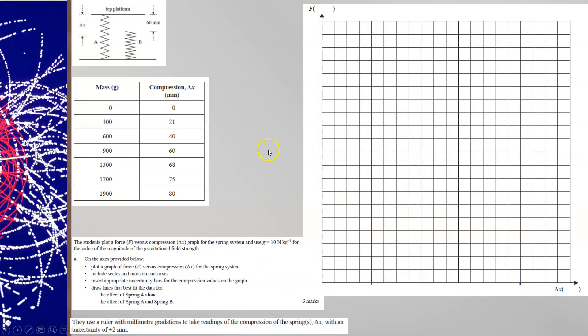To plot the graph, first thing I would have done would be to work out suitable scales. Now they tell you that you want force on the y-axis. So we need to calculate the force from the mass in grams. I tell you to use g is 10 and so 10 newtons per kilogram gives these values for the force.